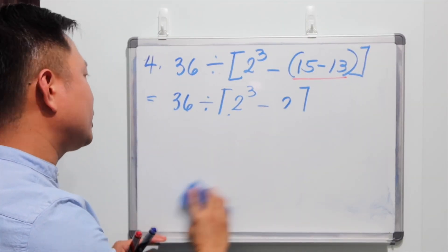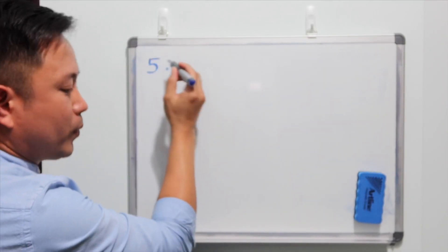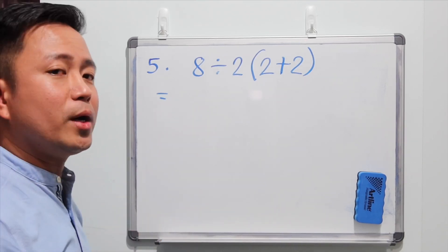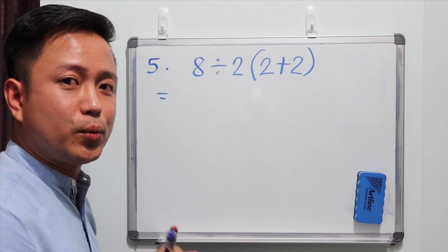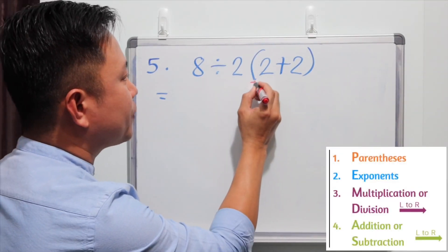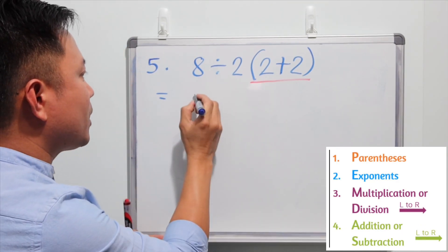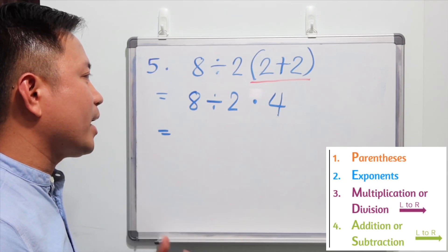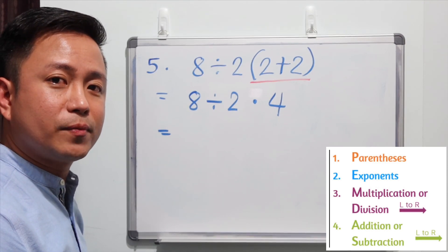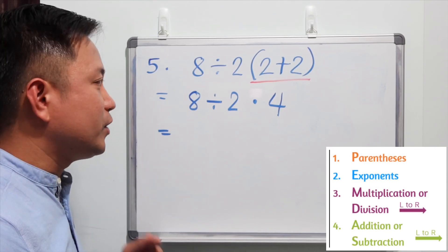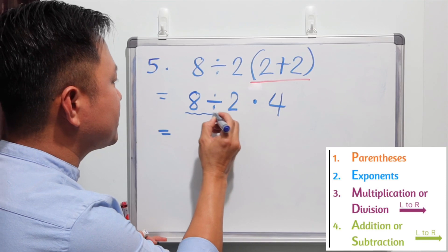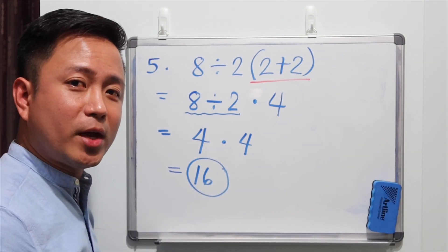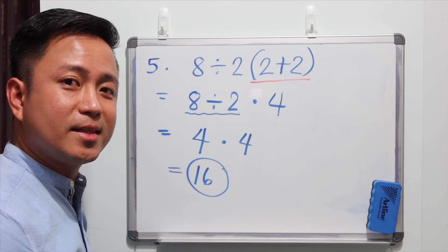Now let's go to the math viral problem, question 5: 8 divided by 2, parentheses 2 plus 2. Compared to examples 1 through 4, this problem is really simple. We simplify the parentheses first: 2 plus 2 gives 4. So we have 8 divided by 2 times 4. We have two operations left — division and multiplication. We simplify from left to right, so division first: 8 divided by 2 is 4, multiplied by 4 gives us 16. The answer is 16, and not 1.